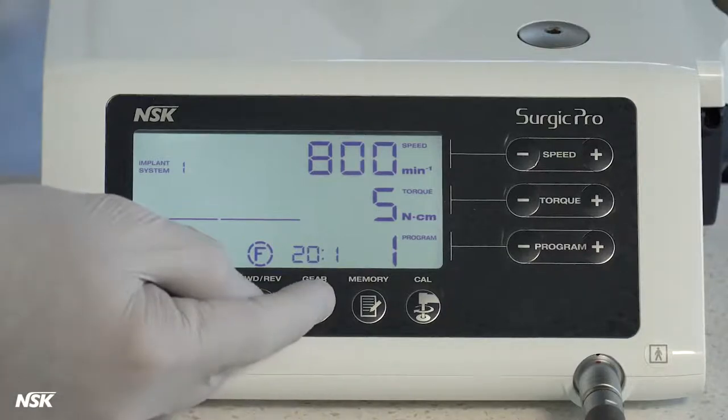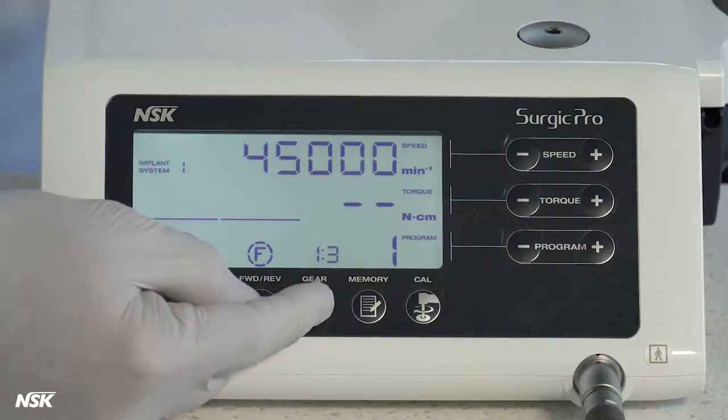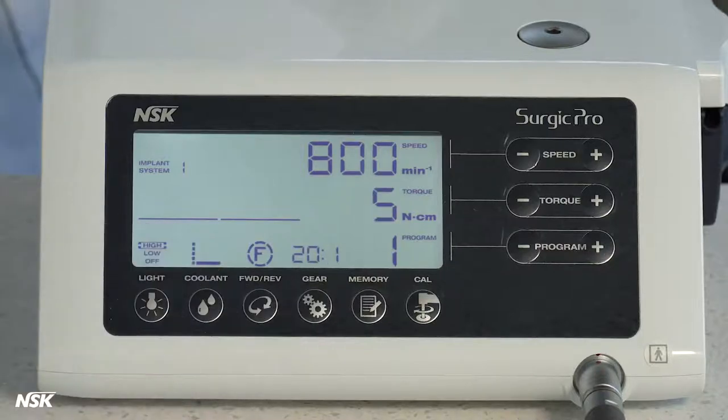Gear button selects the matching ratio for your different attachments. For example, 20 to 1 for implant contra angle.